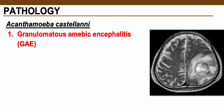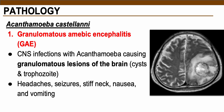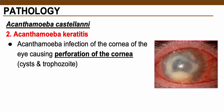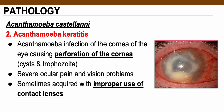Acanthamoeba castellani causes GAE — Granulomatous Amoebic Encephalitis — similar to PAM but with the presence of granulomatous lesions. Granuloma formation is a mixture of trophozoites, white blood cells, and other killer cells in the affected area. This causes pressure around the brain, resulting in neurological deficits, headaches, seizures, stiff neck, nausea, and vomiting. Another disease associated with Acanthamoeba castellani is Acanthamoeba keratitis — infection of the cornea causing perforation, severe ocular pain, and vision problems. Improper use of contact lenses may be a mode of transmission for this disease.